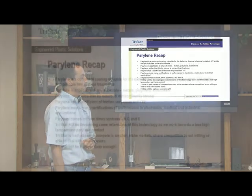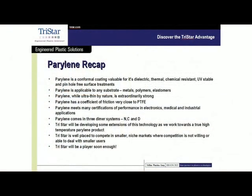To recap, there are essentially three different types of perylene used on the market: perylene N, which is full hydrocarbon; perylene C, which is a slightly chlorinated version; and perylene D, which is a double chlorinated perylene.